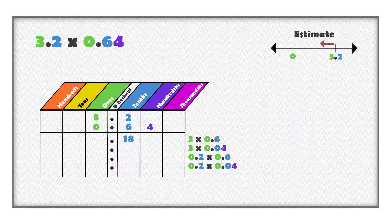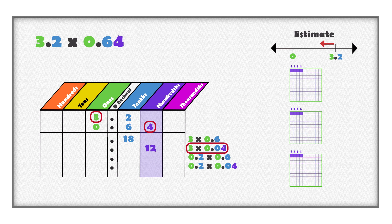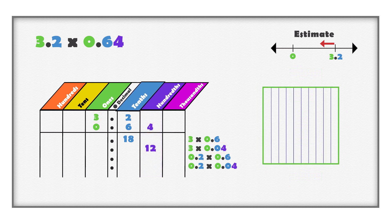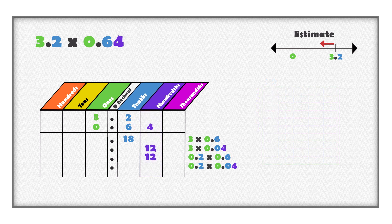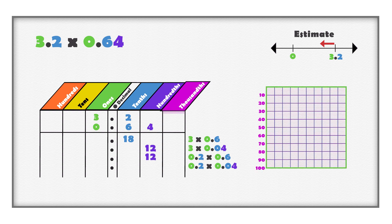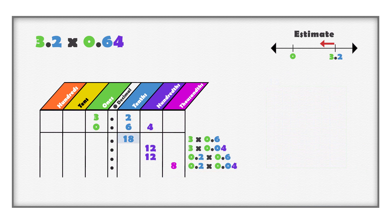When whole numbers are multiplied with hundredths, you get hundredths. Three multiplied with four hundredths is twelve hundredths. When tenths are multiplied with tenths, you get hundredths. Two tenths multiplied with six tenths is twelve hundredths. When tenths are multiplied with hundredths, you get thousandths. Two tenths multiplied with four hundredths is eight thousandths.